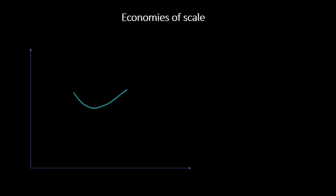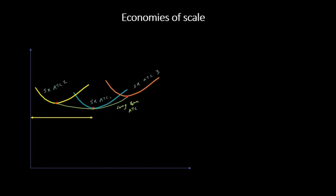Let me come back to the graph. Here I have the short-run average total costs and my long-run average total cost curve. The region from A to B, where the cost for the firm goes down and the curve has a negative slope, is called economies of scale. So from A to B, the firm is said to be operating under economies of scale.